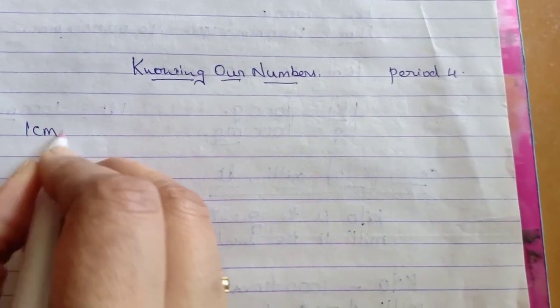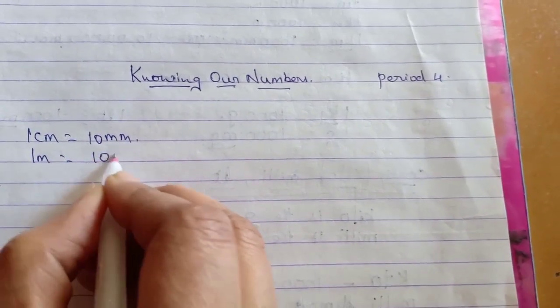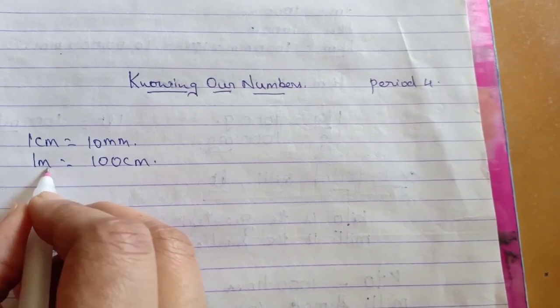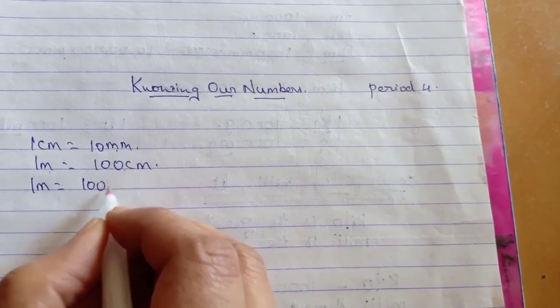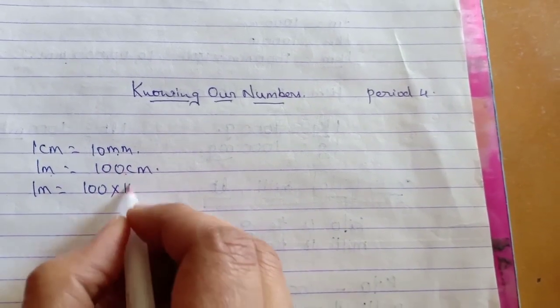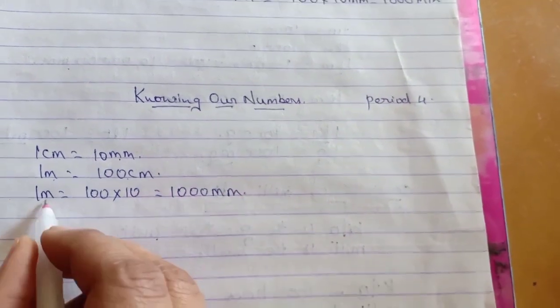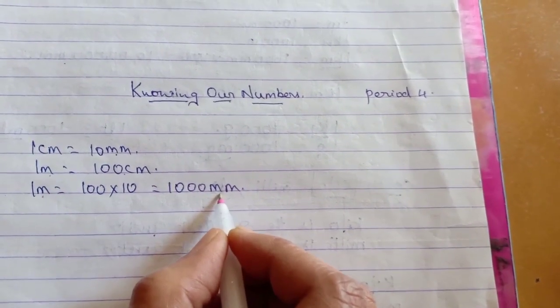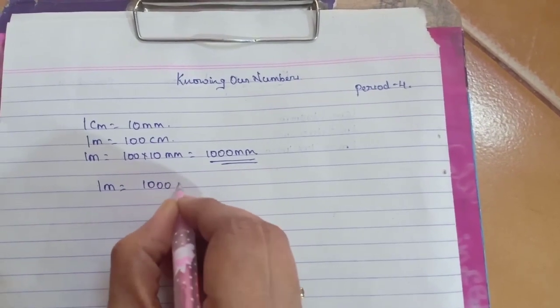Welcome to online teaching. This is our period for continuing with our chapter 'Knowing the Numbers.' We know that 1 centimeter is 10 millimeters and 1 meter is 100 centimeters. Now the relation between meter and millimeters: 1 meter is 100 centimeters into 10 millimeters, so it will be 1000 millimeters. So 1 meter is 1000 mm.